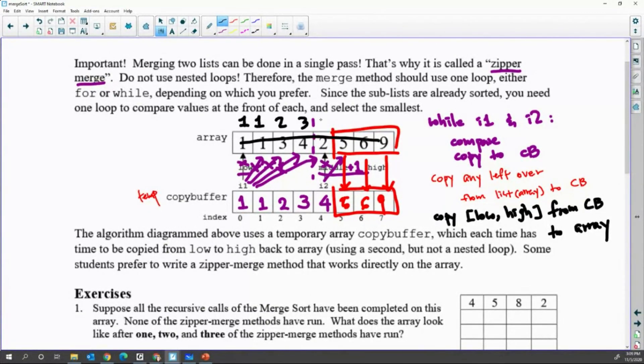If you do that now, the original array will have sorted data: 1, 2, 3, 4, 5, 6, 9. This is the algorithm of the zipper merge.